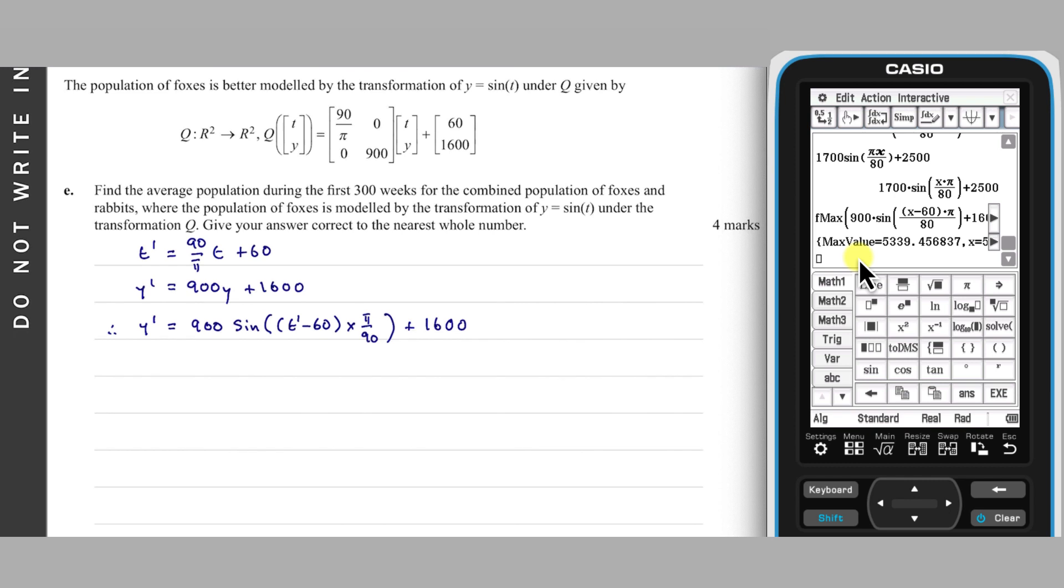To find the average value, we need to combine this new fox population with the rabbit population function and then calculate a numeric definite integral of this combination from 0 to 300. Once done, the average population is this value multiplied by 1 on 300.